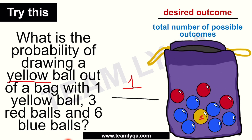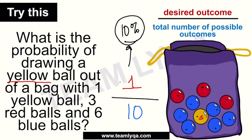So how many total balls are there? You have three red, one yellow — that's four — plus six blue, for a total of ten balls. So the probability of drawing a yellow ball is one out of ten. Or, if we express it as a percentage, that's ten percent.